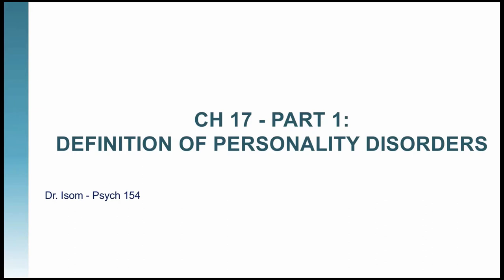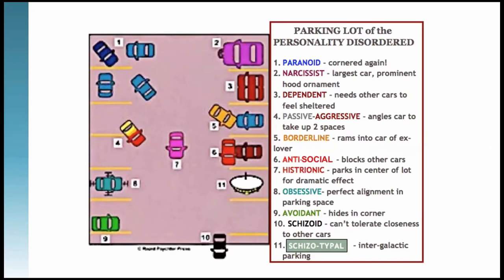I'll start off with this somewhat comical infographic about the personality disorders. This graphic is a little dated because it includes passive-aggressive as a personality disorder, which is no longer considered one. But it's still a fun way to think about the different types of disorders — for example, you can look for the narcissist, which is the car with the largest and most prominent hood ornament.